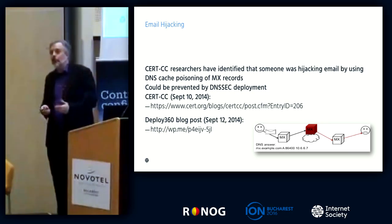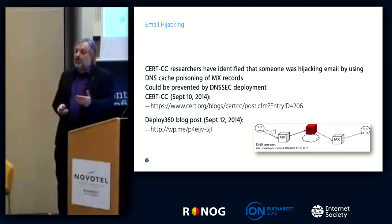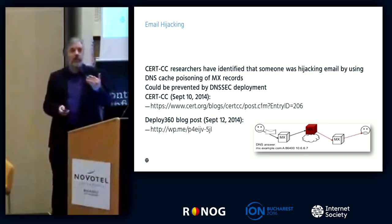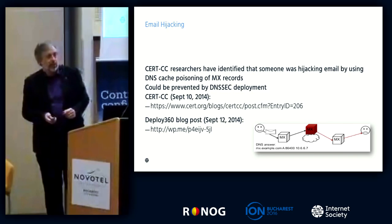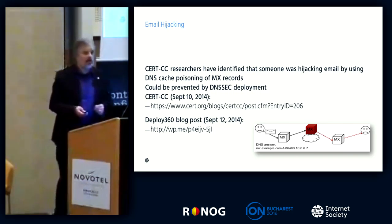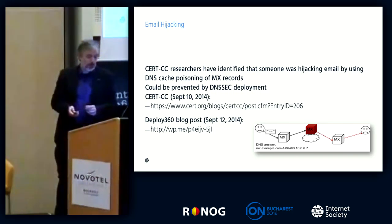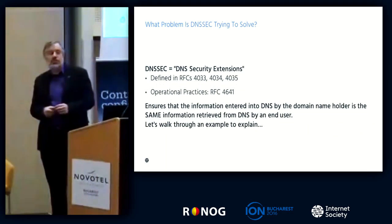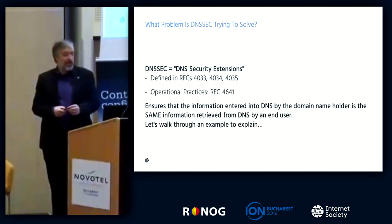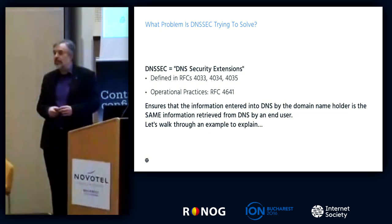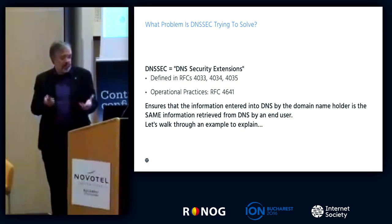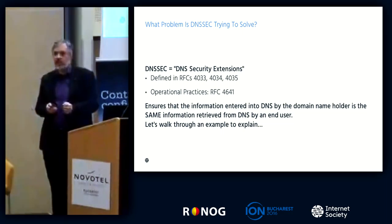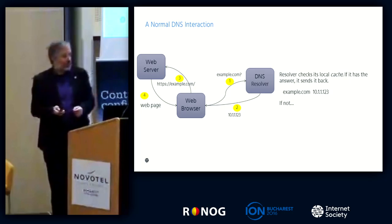The mail was actually getting delivered, but in the meantime it was going to somebody else's servers. This was enabled by the fact that mail servers received the MX record saying deliver the mail here, but it was the wrong MX record — they were getting information out of DNS and trusting it. So DNS Security Extensions, or DNSSEC, is defined in a couple of RFCs, and it talks about making sure the info you get out of DNS is the same as what goes in.